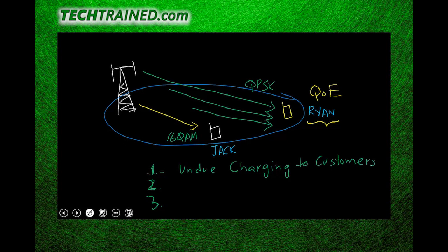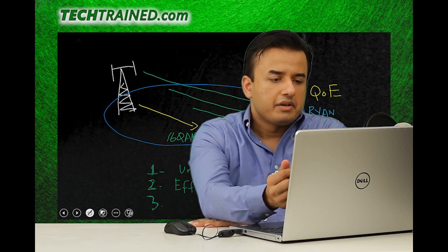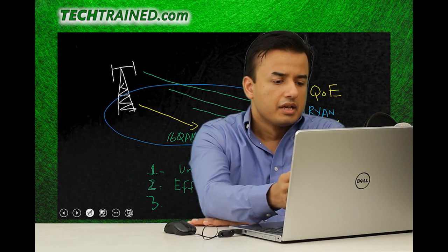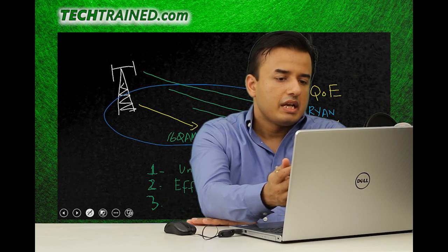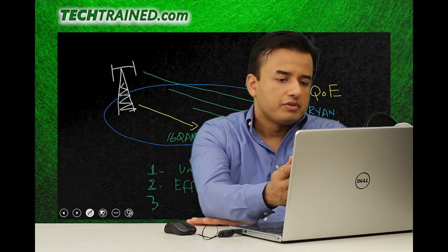Point number two is efficient usage of resources. Since Ryan is standing in poor coverage, eNodeB will use a lower modulation scheme — QPSK instead of 16QAM or 64QAM — and will need more retransmission attempts to deliver the same data, consuming more bandwidth. Instead, there should be an efficient resource usage strategy so that edge-of-cell users either receive adequate service or are moved to better resources.